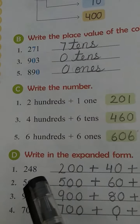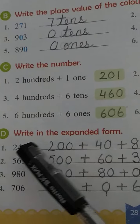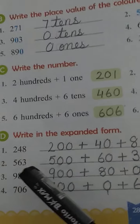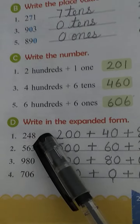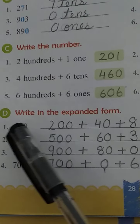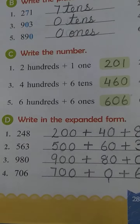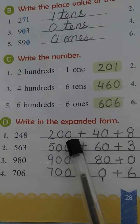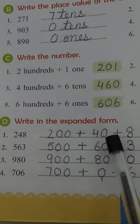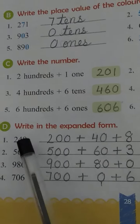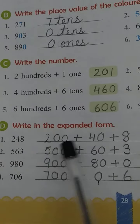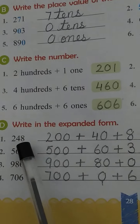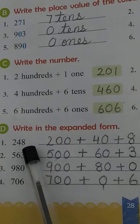Now in Part D, the number is given and you have to expand it — that means write the place value of each digit. Let's see the first question: the number is 248. When we expand it, 2 is at the hundreds place so it is written as 200; 4 is at the tens place, written as 40; and 8 is at the ones place, written as 8. So 200 plus 40 plus 8 is the expanded form of 248.